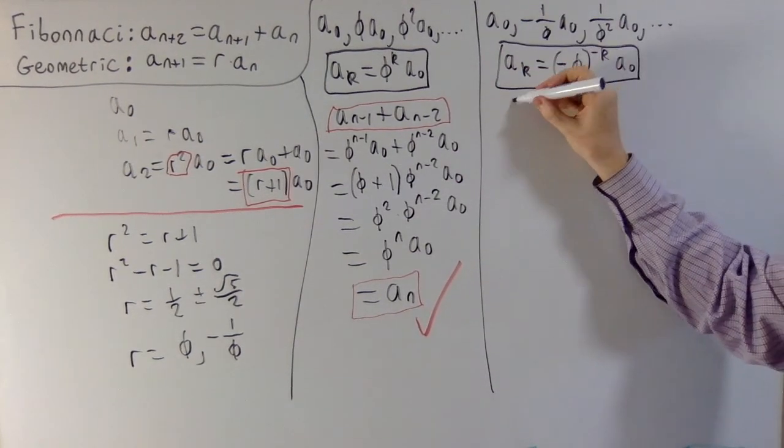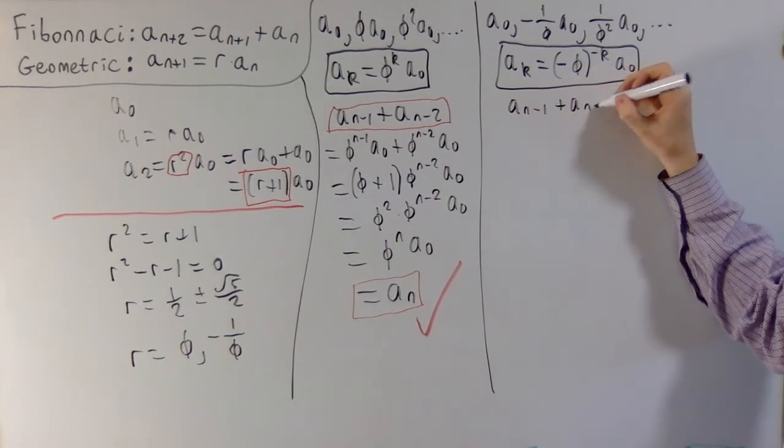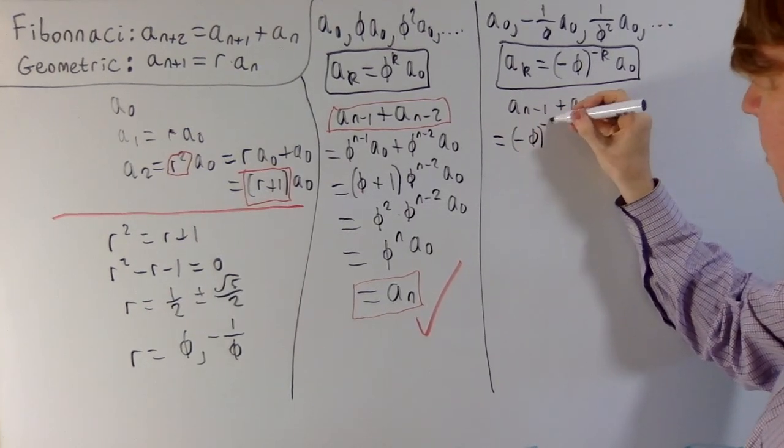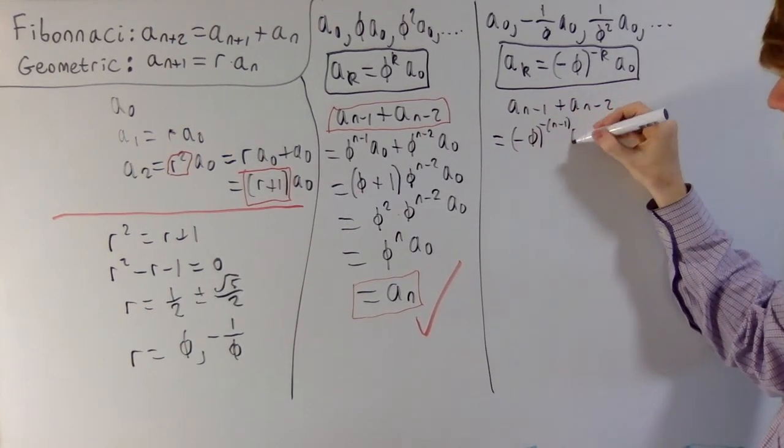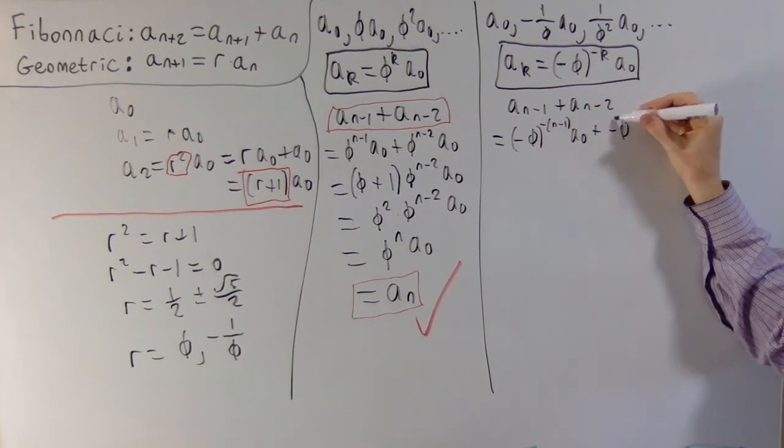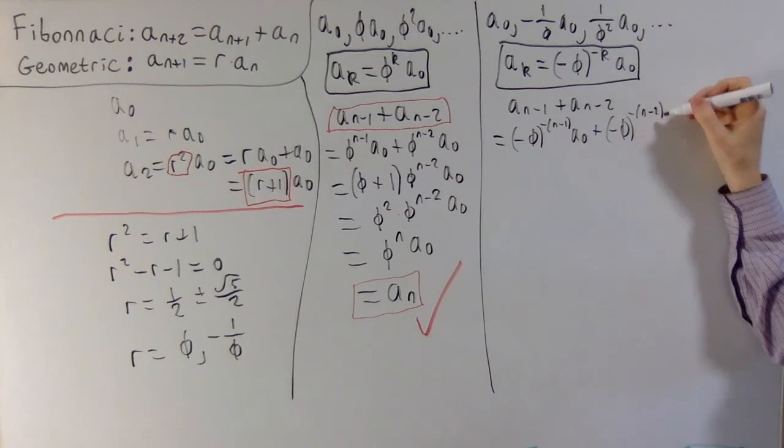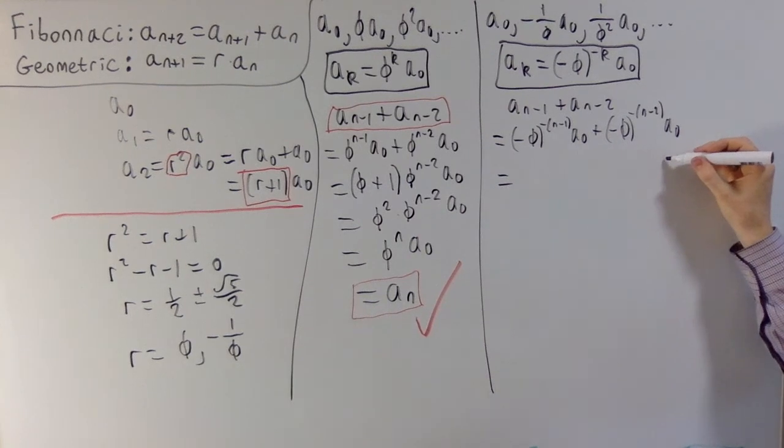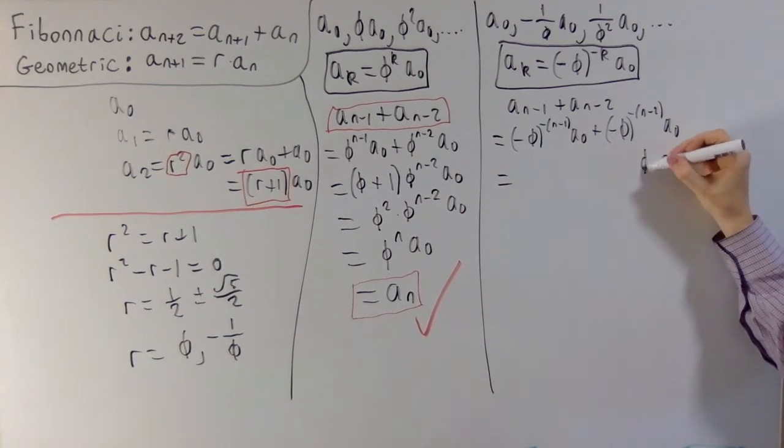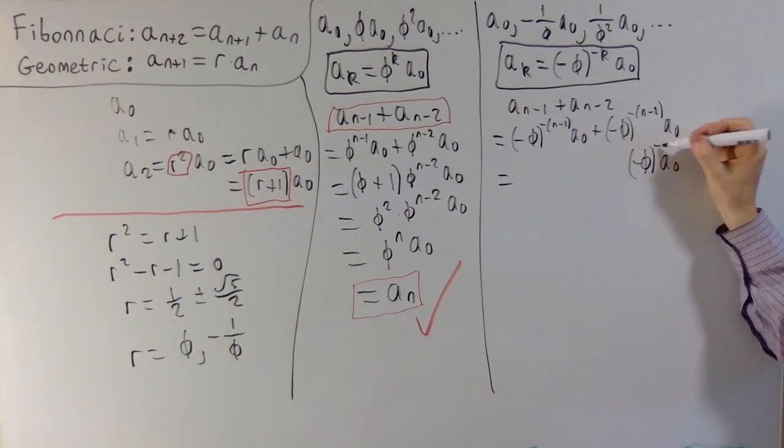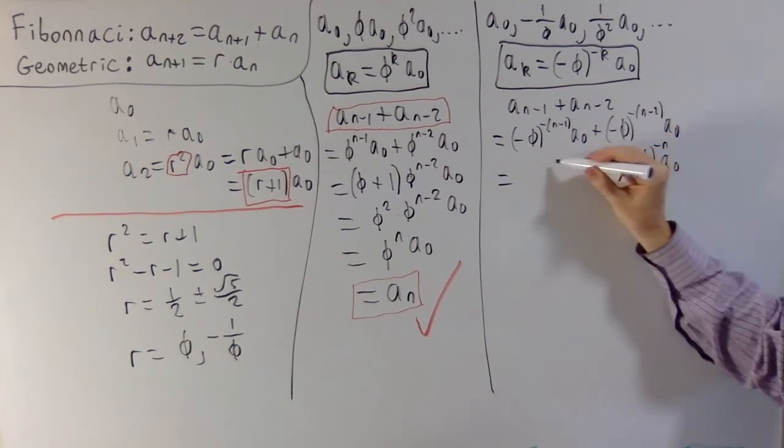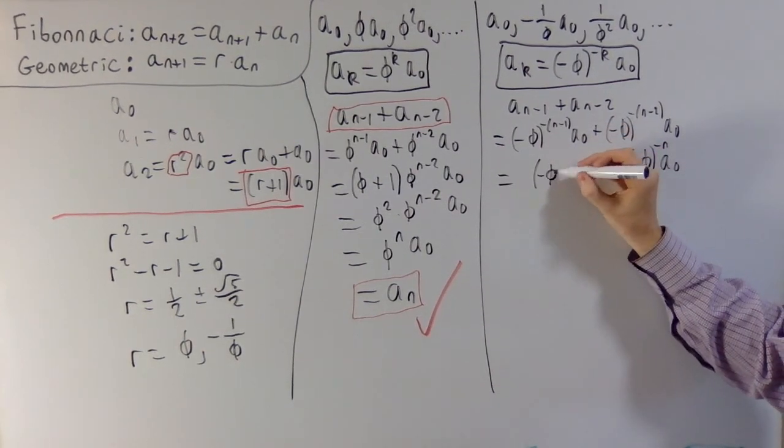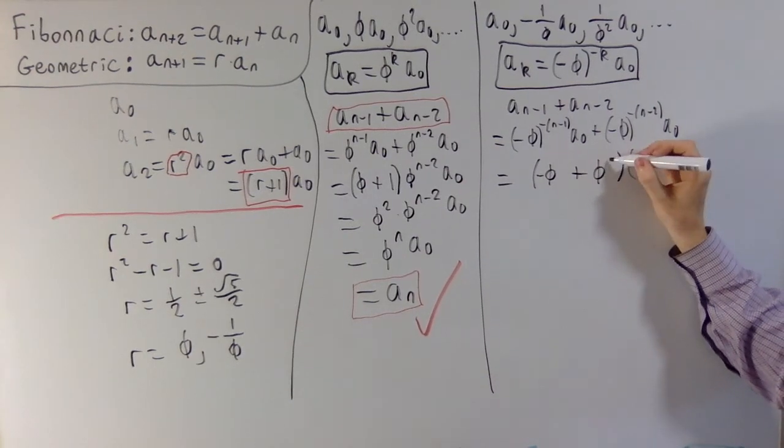So we'll try the exact same sort of argument as before. We'll start with a n minus 1 plus a n minus 2. So just from the definition, this gives you minus phi to the power of minus n minus 1, multiplied by a0, plus minus phi to the power of minus n minus 2, multiplied by your initial term a0. And then we can factorise again here. You're definitely going to take out a factor of a0. You can also take out a factor of minus phi to the power of minus n. And then what you're left with here is, if you think from the negative 1 here, you're left with a minus phi, and then plus a phi squared.